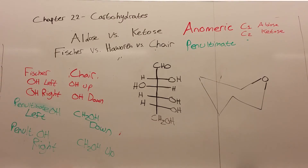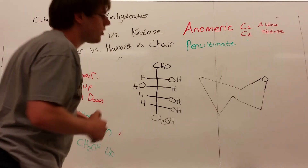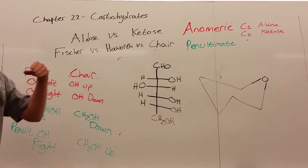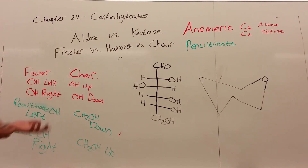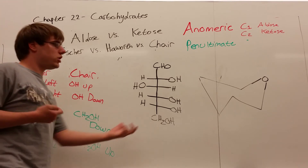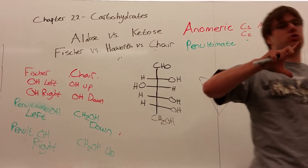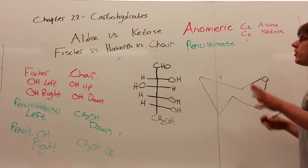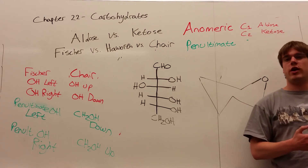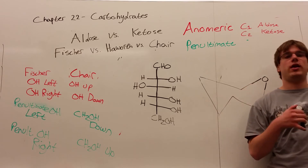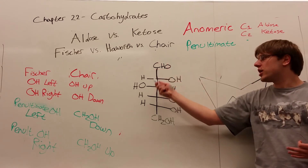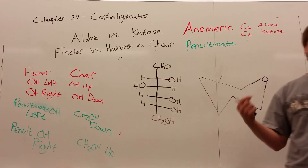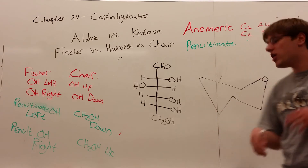Another question they can ask is about comparing Fischer to chair conformations. The rules we set up for Fischer-to-Haworth projections still work for translating Fischer to chair conformations in terms of up and down versus left and right. The key difference is that a chair conformation isn't the same as a Haworth — it's that pinched bow-tie-looking structure. If they ask you to draw a chair conformation, it will always be for an aldohexose, a six-carbon chain. That's the only thing that forms a six-membered chair.